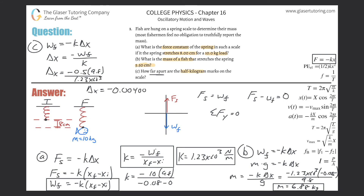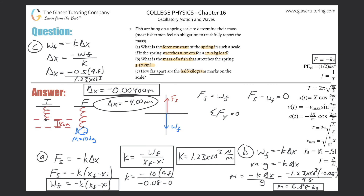Going two more sig figs out, this is in meters. Converting: that's about negative four millimeters or 0.4 centimeters. Any unit form is fine — they represent the same thing. The answer is negative because the displacement was downward, based on how the problem was framed.